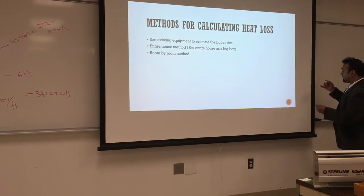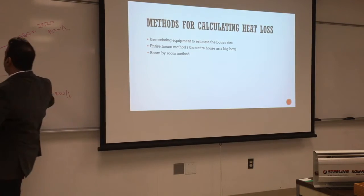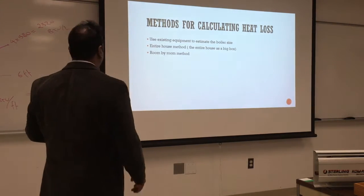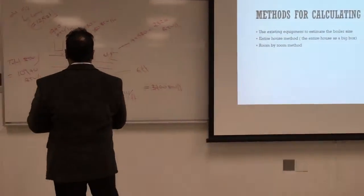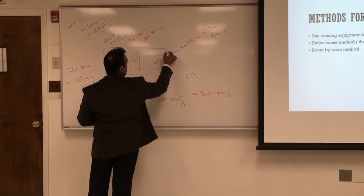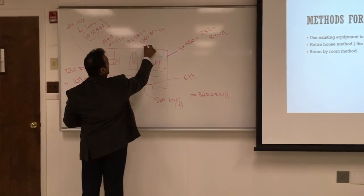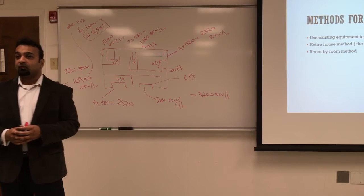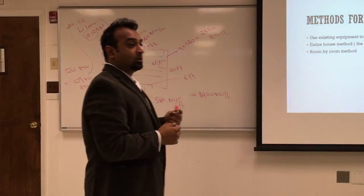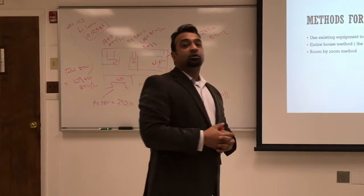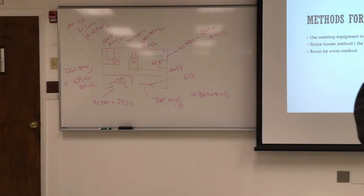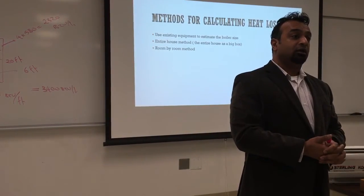The second method is the entire house method. We treat the entire house as one big room—one calculation. All the windows, all the walls, the roof, and the floor. We take the entire house as one block and don't do it room by room. For this floor plan, we calculate the entire length of 30 by 20 feet as one big room, subtract the windows, do the roof, ceiling, and door, and we're done. It can take 10 minutes, but it's inaccurate—you might end up overestimating or underestimating the heat load.